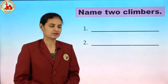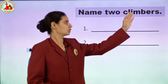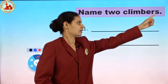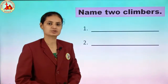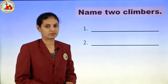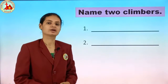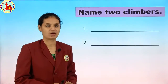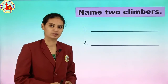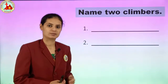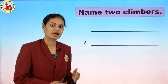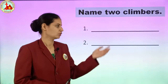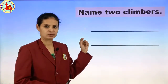The next question is: name two climbers. C, L, I, M, B, E, R, S. Climbers. What are climbers? Climbers have a weak stem. They cannot stand by their own and they need support to grow. Examples are grapevine, money plant, and pea plant. So here any two names we have to write.